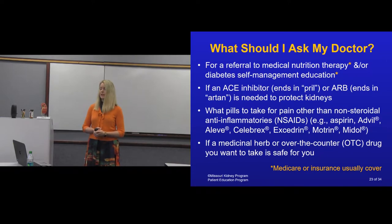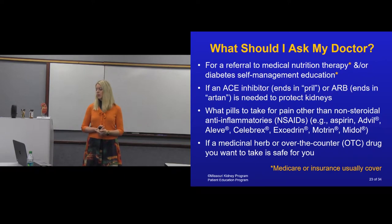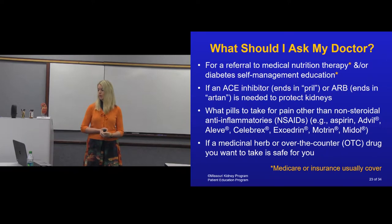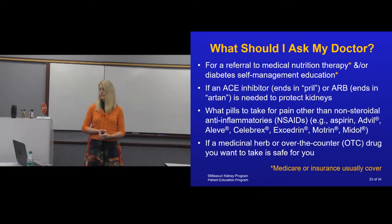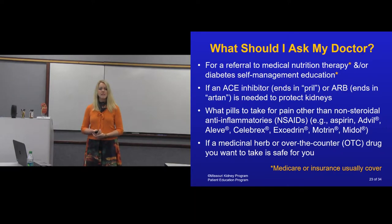ACE inhibitors are medications that end in 'pril' — lisinopril has been around for many years. ARBs end in 'artan.' These medicines help protect the kidney and slow the progression of kidney disease. As long as there's no allergy, they have been known to minimize progression and keep your heart and kidneys healthy. We also want you to stay away from anti-inflammatories, also called NSAIDs — that includes Celebrex, Motrin, Advil, Aleve, and Ibuprofen. If you have a question about one of those medicines or an herb you've found, bring the bottles or a photo to your provider so we can advise whether those would be safe for your kidneys.